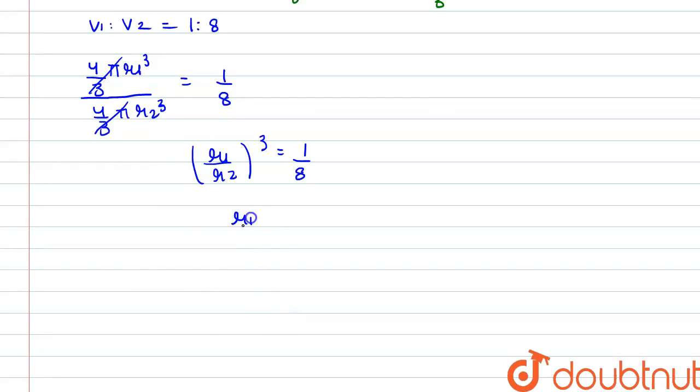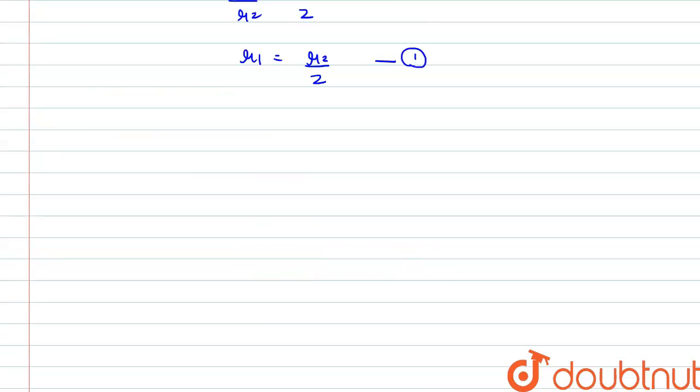We get r1 by r2 equals 1 by 2, or we can also say r1 equals r2 by 2. So this is equation one. Next, we have to find the ratio of the surface areas, and we know that the surface area